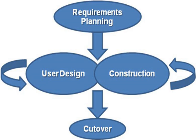Software prototyping is about creating prototypes, i.e. incomplete versions of the software program being developed. The basic principles are: Prototyping is not a standalone, complete development methodology, but rather an approach to try out particular features in the context of a full methodology such as incremental, spiral, or rapid application development. It attempts to reduce inherent project risk by breaking a project into smaller segments and providing more ease of change during the development process. The client is involved throughout the development process, which increases the likelihood of client acceptance of the final implementation. While some prototypes are developed with the expectation that they will be discarded, it is possible in some cases to evolve from prototype to working system. A basic understanding of the fundamental business problem is necessary to avoid solving the wrong problems, but this is true for all software methodologies.